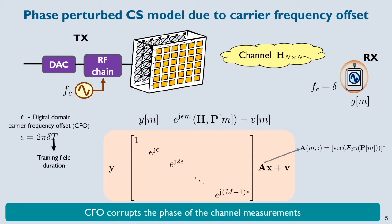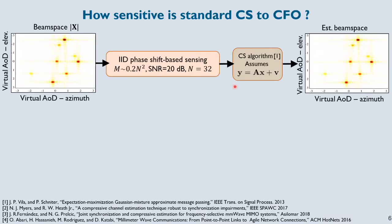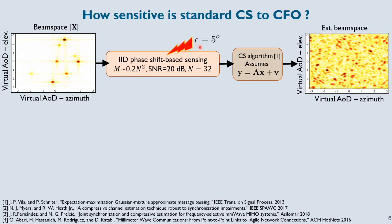So will linear compressed sensing work even for phase-perturbed measurements? To understand this, I did a small experiment. I took the beam space channel X, which is sparse, compressed it down to about 20% of the dimension of X, and used a message passing based optimization technique — the output looks very close to the original beam space. Then I introduced phase perturbations, perturbing the compressed measurement vector AX with linear phase error increments of 0, 5 degrees, 10 degrees, and so on. The output of this pipeline is a completely distorted version of the original beam space.